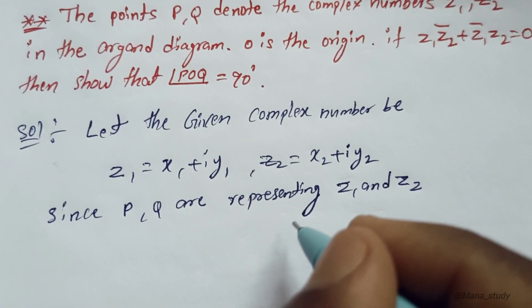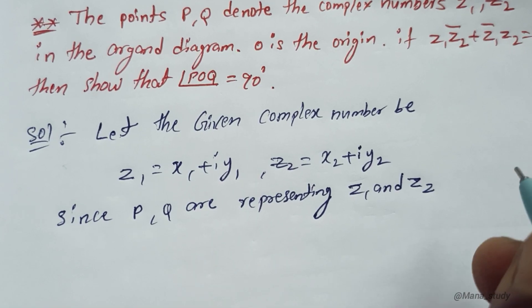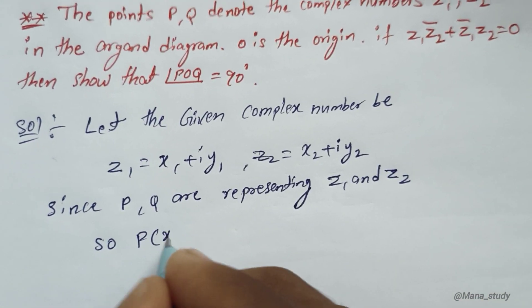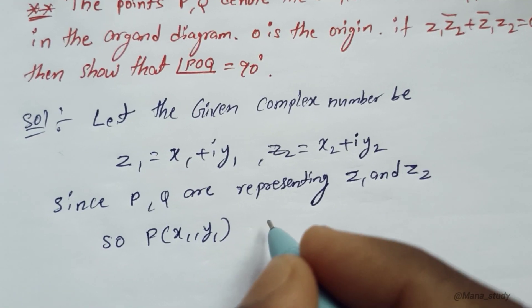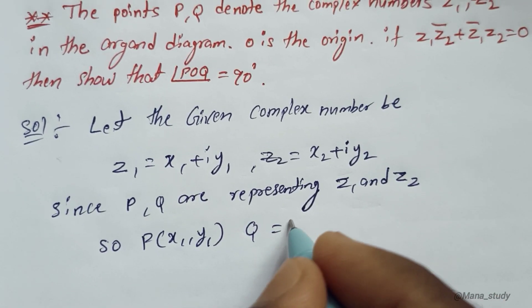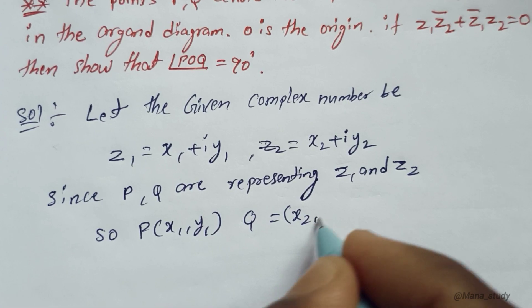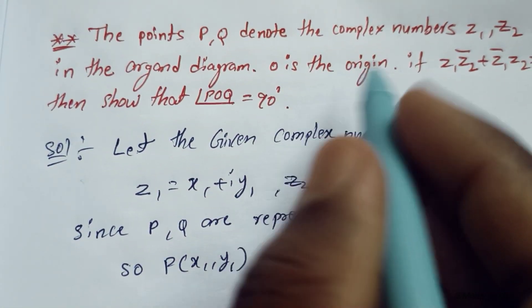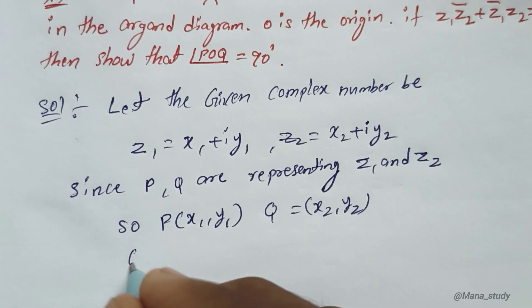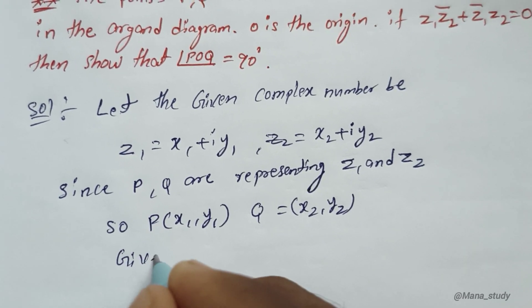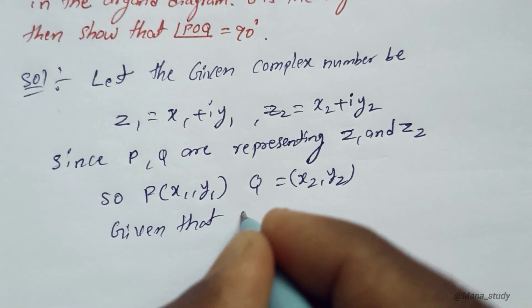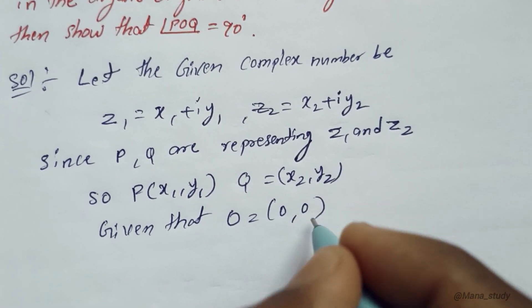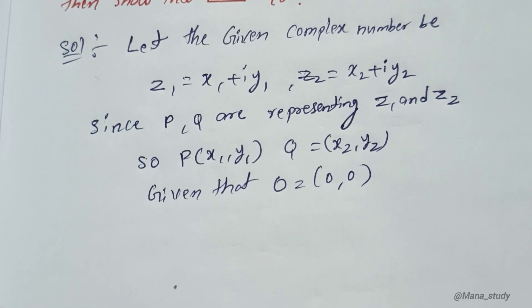P and Q are representing Z1 and Z2. So P is the point (X1, Y1) and Q is the point (X2, Y2). Given that O is the origin, so O equals (0, 0).